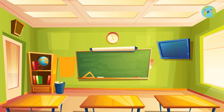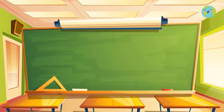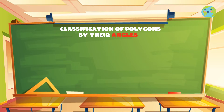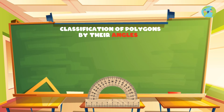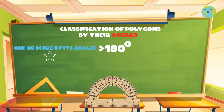Now we're going to classify the polygons by their angles. We must measure with a protractor the measure of the angles of the polygon. If one or more of its angles measures more than 180 degrees, they are called concave polygons.